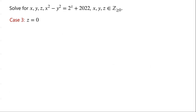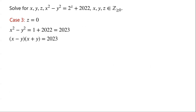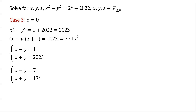Case 3: z equals 0. Then the equation becomes x squared minus y squared equals 1 plus 2022, which is 2023. We write x squared minus y squared as x minus y times x plus y. 2023 can be written as 7 times 17 squared. So x minus y and x plus y must be factors of 2023. There are three possibilities: x minus y equals 1 and x plus y equals 2023; or x minus y equals 7 and x plus y equals 17 squared (289); or x minus y equals 17 and x plus y equals 7 times 17 (119).